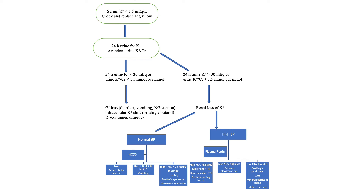When blood pressure is normal, look at serum CO2. If low CO2, consider renal tubular acidosis — non-anion gap metabolic acidosis with hypokalemia. If serum CO2 is elevated with low urine chloride, think vomiting. If serum CO2 is high — metabolic alkalosis — and urine chloride is high, think low magnesium, diuretics, Bartter's syndrome, or Gitelman syndrome. Bartter's syndrome mimics being on a loop diuretic: normal blood pressure, metabolic alkalosis, hypokalemia. Gitelman syndrome mimics being on a thiazide: normal blood pressure, metabolic alkalosis, hypokalemia, and hypocalciuria.